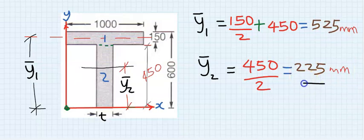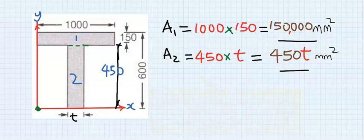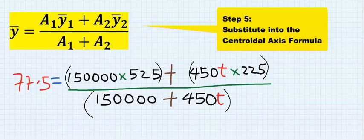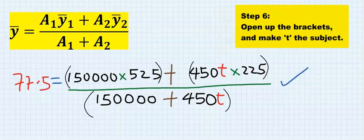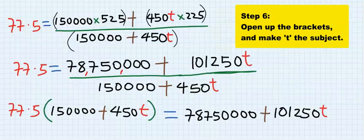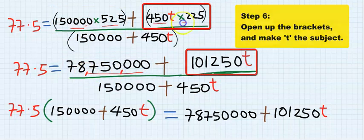Now we have obtained the centroid of each rectangle and also know the area of each rectangle. Next, substitute into the centroid formula. If you substitute carefully you get this expression. Next, open up the brackets — this multiplied by its value gives this result, and this multiplied by its value gives this result.